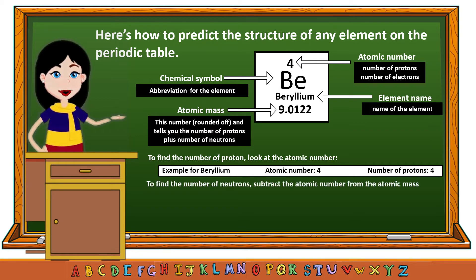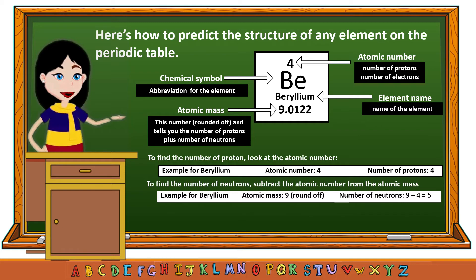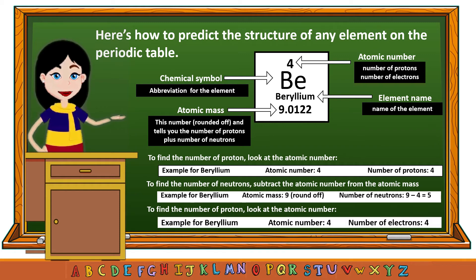To find the number of neutrons, subtract the atomic number from the atomic mass. The atomic mass of beryllium is 9.0122, which rounds to 9. So 9 minus 4 equals 5; therefore, the number of neutrons of beryllium is 5. To find the number of electrons, the atomic number of beryllium equals the number of protons and equals the number of electrons. Since the atomic number is 4, the number of electrons of beryllium is also 4.